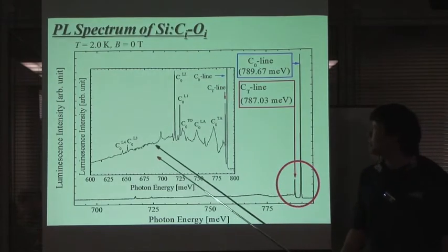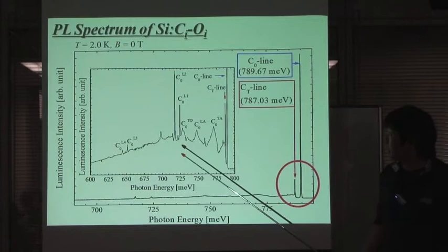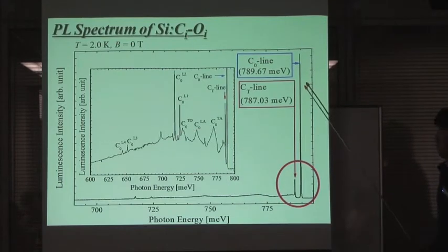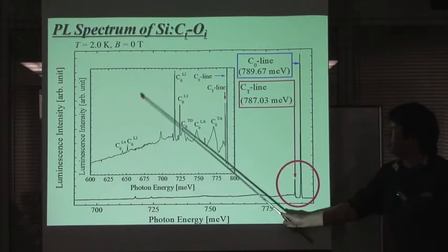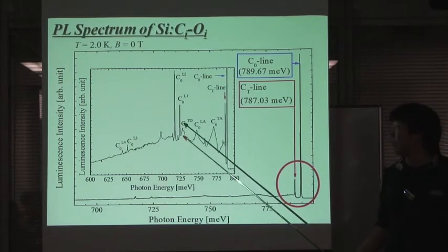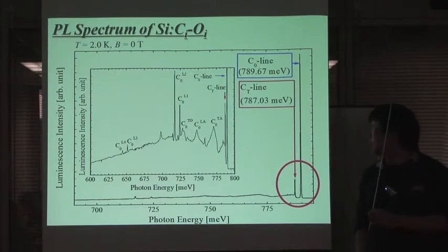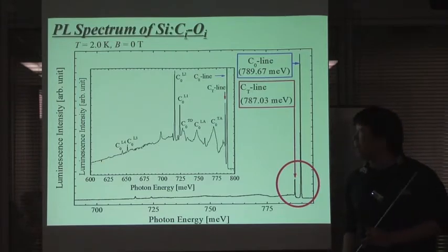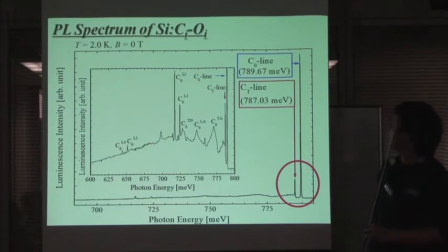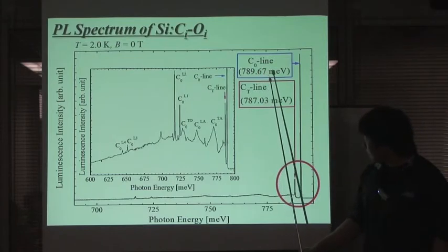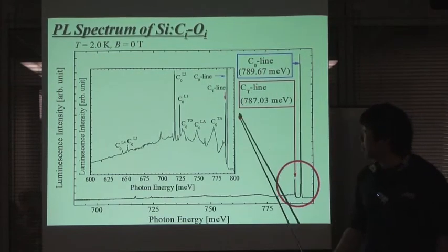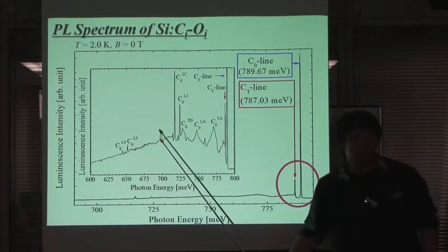This slide shows the photoluminescence spectrum from interstitial carbon and interstitial oxygen defects in silicon. The C0 line is a no-phonon line, which means luminescence without phonon assistance, as I explained in the previous section. This figure shows the phonon replica and local vibration mode related to the C0 line. Many previous works report not only the C0 line, but also phonon replicas and local vibration modes related to it.